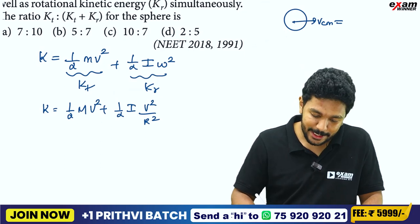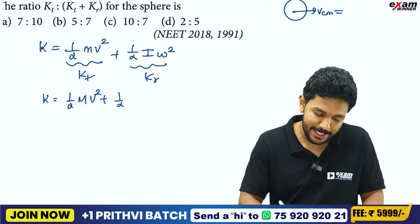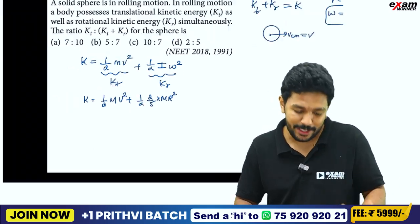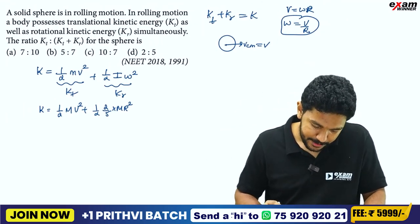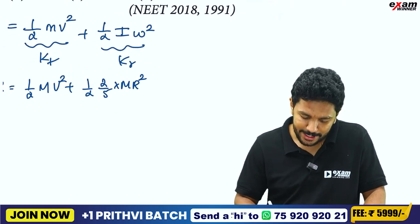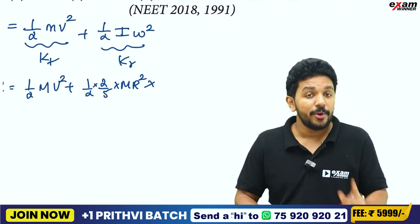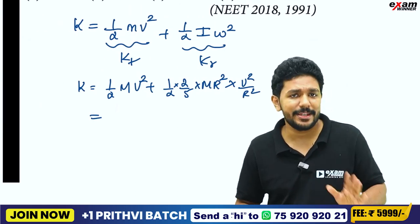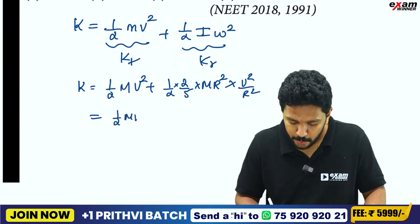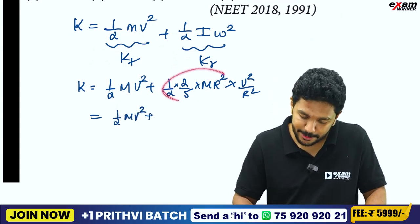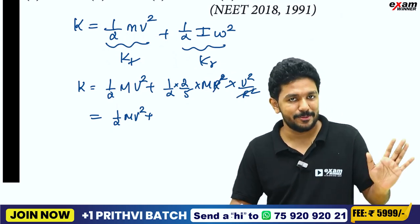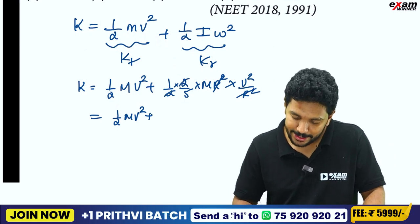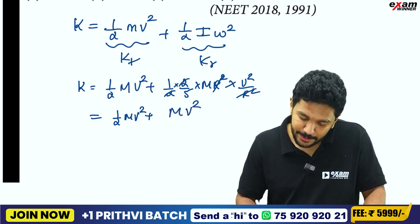We replace omega squared with v squared by r squared. The moment of inertia I for a solid sphere is 2/5 m r squared. Substituting, the r squared terms cancel, giving us the total kinetic energy expression.